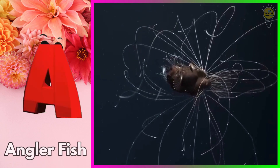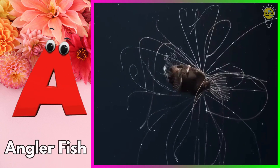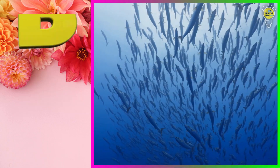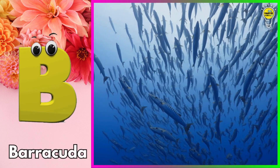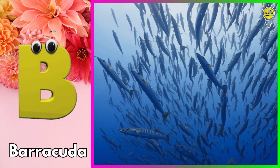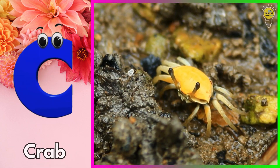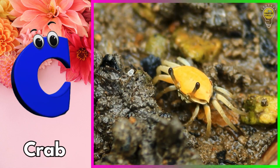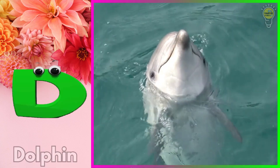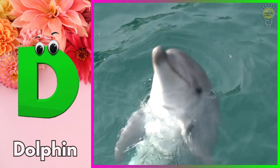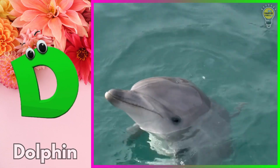A is for anglerfish. B is for barracuda. C is for crab. D is for dolphin.